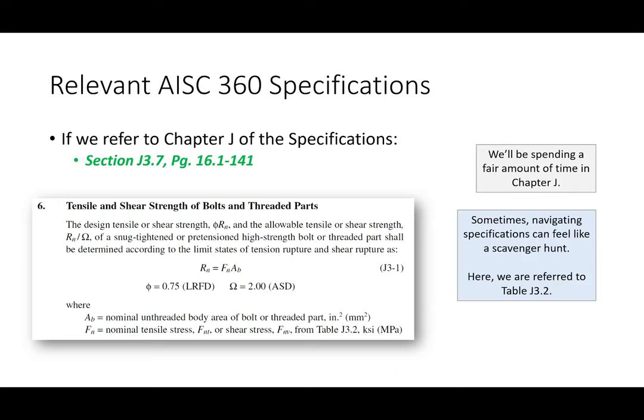One thing about specifications — and this is true about specifications in general, the steel manual is no exception — is that sometimes navigating the spec can feel like a scavenger hunt. A section will say here's how you compute the capacity, but to get this value you go to another section, and to get that value you go somewhere else. That's just the nature of specifications, whether it's steel, concrete, bridges, or highway.